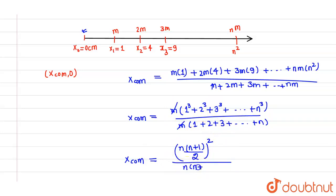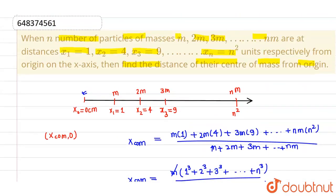natural numbers, which is given by n(n+1)/2. So we are left with n(n+1)/2. This is the position of center of mass from the origin. I hope you understood, thank you.